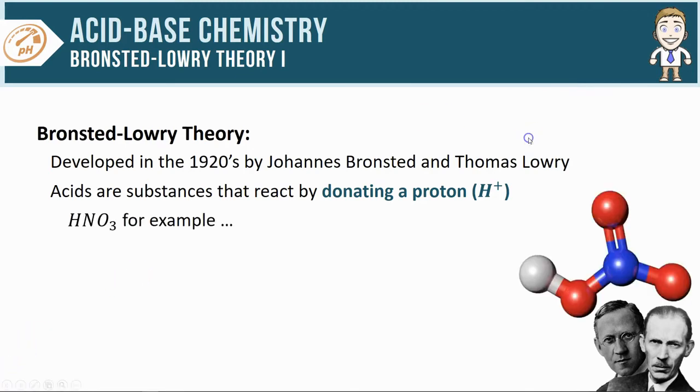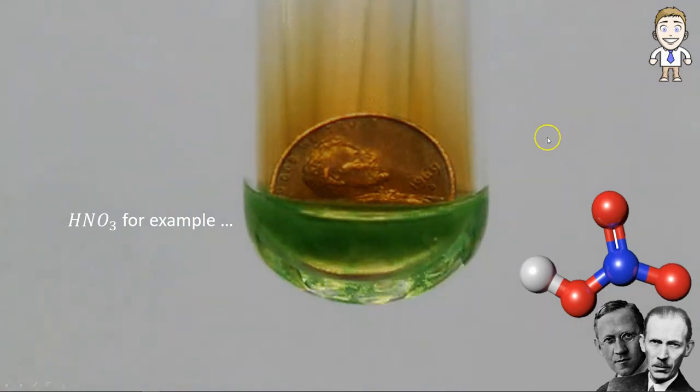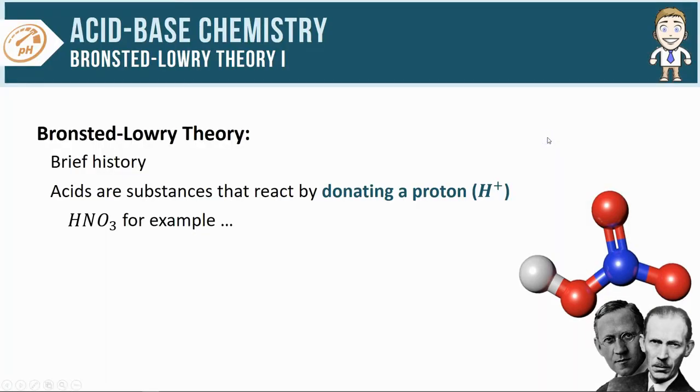Let's take a look at how this works with something that we know is an acid, like HNO3. The formula looks like an acid. I can see that hydrogen there. It's super reactive with metals like copper shown here. Definitely an acid, and now we can take a look at why it is an acid according to this theory.